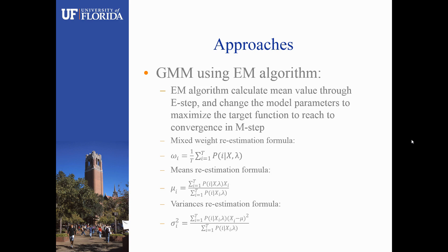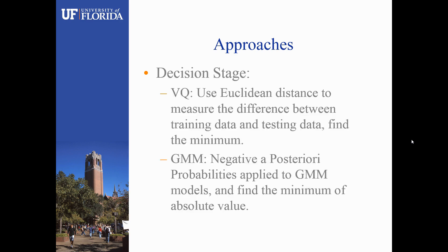Here are the re-estimation formulas of mixed weights, means, and variances. At last, we will enter into the decision stage. For VQ, we will use Euclidean distance to measure the difference between training data and testing data and find the minimum. For the GMM method, we will calculate the negative of the a posteriori probabilities applied to GMM models and find the minimum of the absolute value.